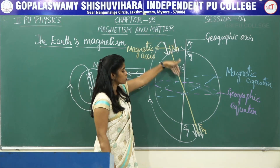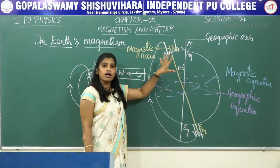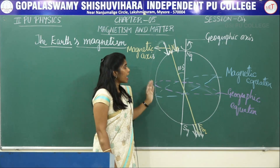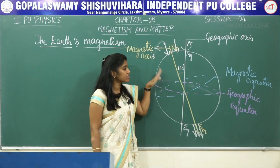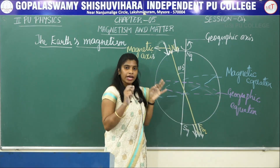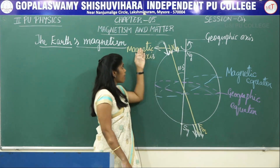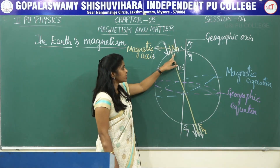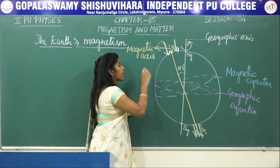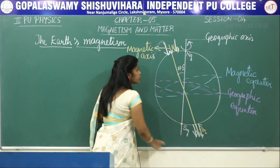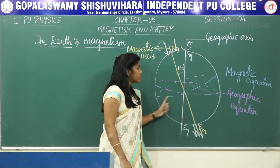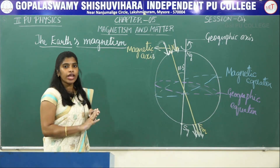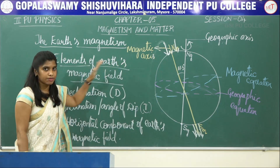So the magnetic field lines pass from north to south inside the earth and from south to north outside the earth. We have the geographic axis (axis of rotation), the geographic equator (plane perpendicular to geographic axis), the magnetic axis (axis along which freely suspended magnets rest), and the magnetic equator (plane perpendicular to the magnetic axis). Now it is time to define the three elements of the earth's magnetic field.